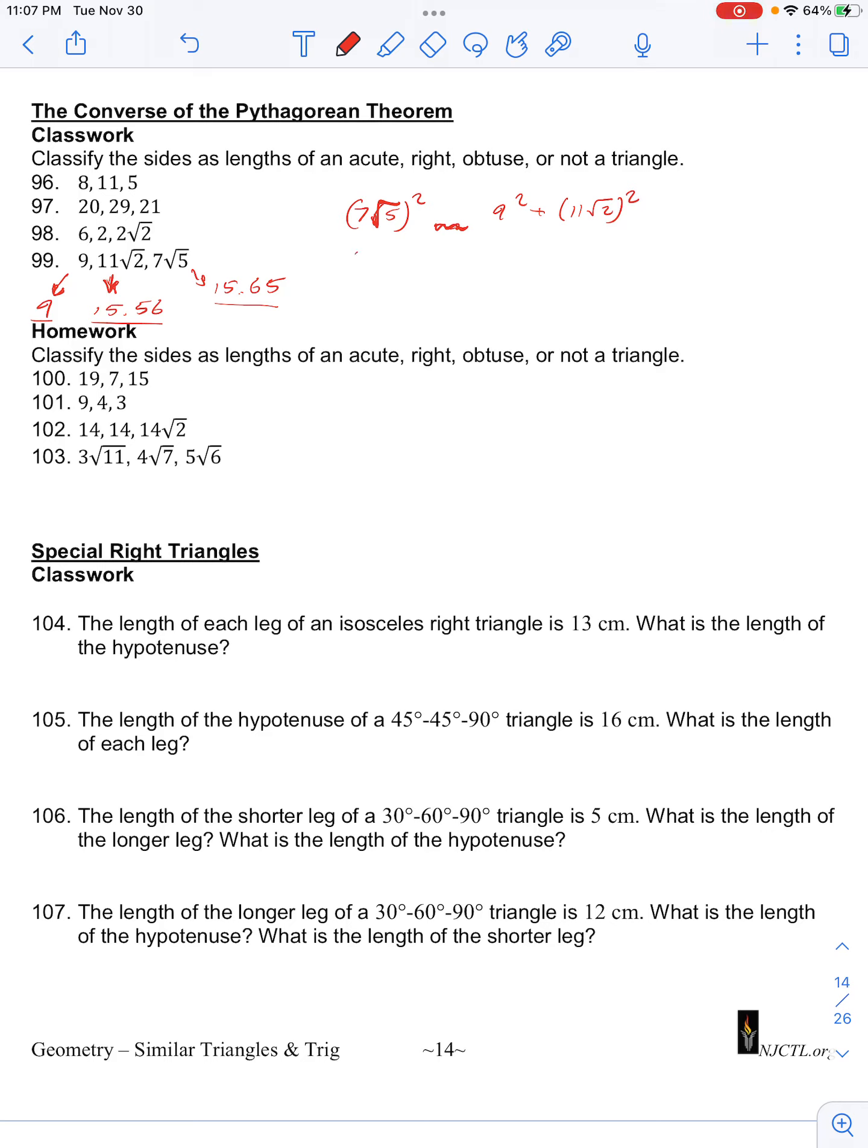So this will be 7 squared is 49 times 5. It has some relationship to 81 plus 11 squared is 121 times 2. So multiplying this out,